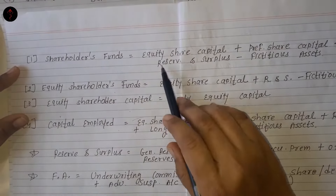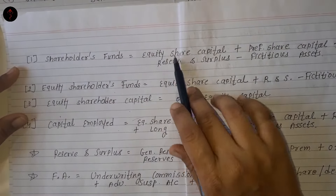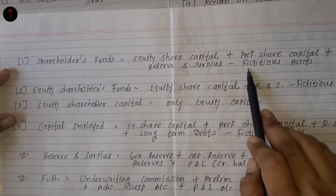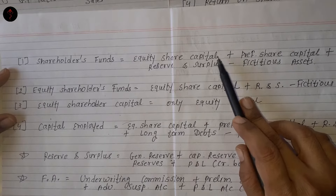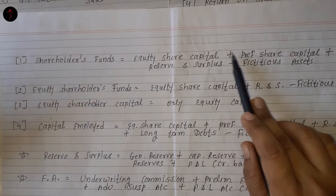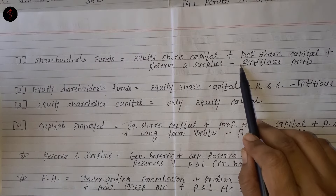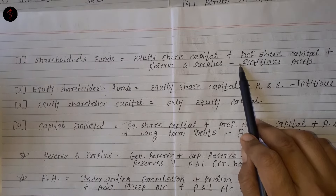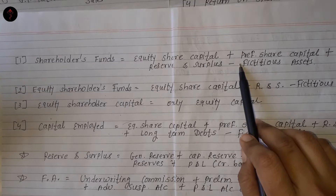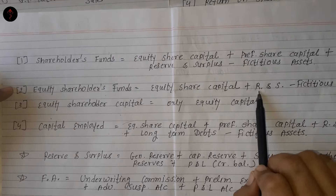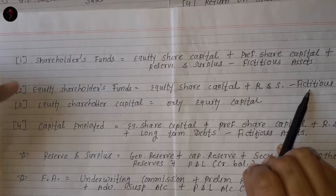Shareholders' fund का मतलब होता है: equity share capital plus preference share capital plus reserve and surplus minus fictitious assets. यानि आपकी long-term liabilities — equity, preference, reserve and surplus — जिसमें से fictitious assets minus होंगी. Equity shareholders' fund में: equity share capital, reserve and surplus, minus fictitious assets.